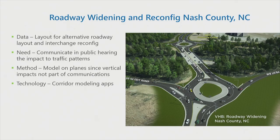Our first project is in Nash County, North Carolina. The concern was that we were laying out a new road along an existing corridor, going from two lanes to four lanes, and changing from standard intersections to roundabouts — including a peanut roundabout configuration where two roundabouts sit close together. We needed to communicate to the public what that change was going to look and feel like for the people who drove along that corridor every day. Since there wasn't a significant vertical change concern, we set aside full 3D slope modeling to focus on the geometric and experiential changes.